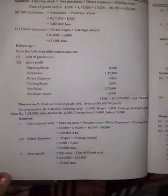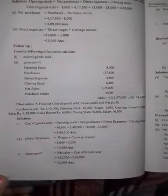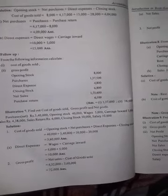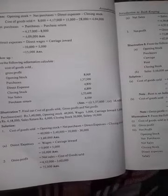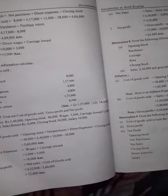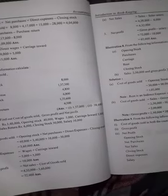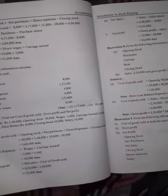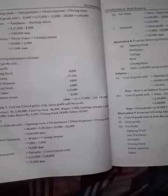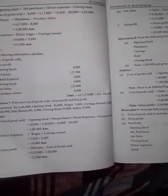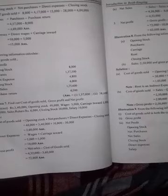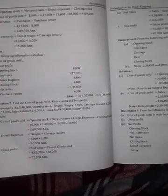Now the seventh illustration. COGS is calculated as: net purchases plus direct expenses minus closing stock. Opening stock is taken from the previous period's closing stock. Direct expenses are those we pay directly, and they are used to make our trading account.